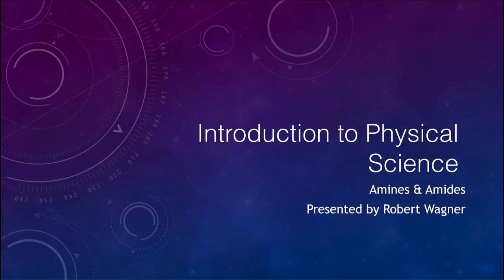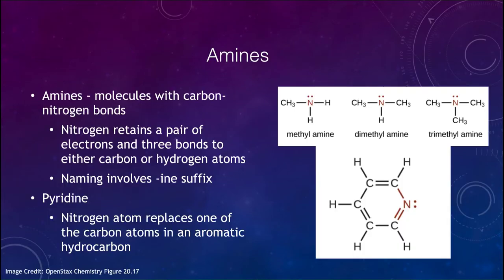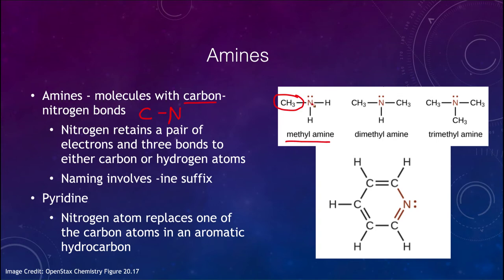Let's take a quick look at these. First of all, for the amines — amines are molecules that have a carbon-nitrogen bond, so carbon bonded to a nitrogen atom. We see some examples here in terms of methylamine, which has one methyl group, and then we have the nitrogen atom, which replaces what we would normally have looked at as a carbon group. So we have two hydrogens.